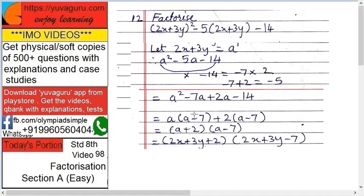We get a(a minus 7) plus 2(a minus 7). Taking (a minus 7) as common gives (a minus 7)(a plus 2). Check: 2 times 7 is 14 with minus sign — correct. Now substituting back, a is 2x + 3y, so the factors are (2x + 3y + 2) into (2x + 3y minus 7). That is the answer.